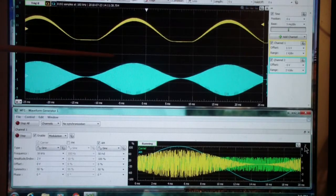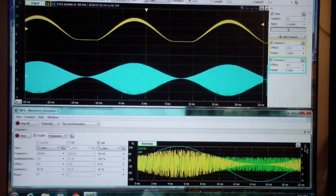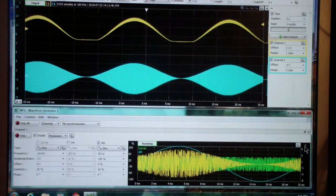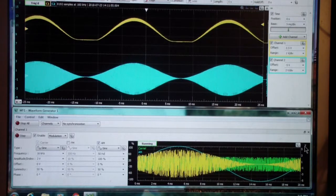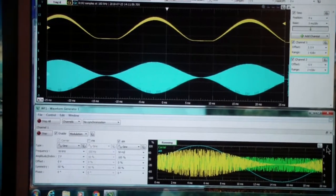At the top is the Analog Discovery oscilloscope, and at the bottom is waveform generator 1. The signal we're generating is an amplitude modulated signal at 16 kilohertz. Let me zoom in on the waveform generator.